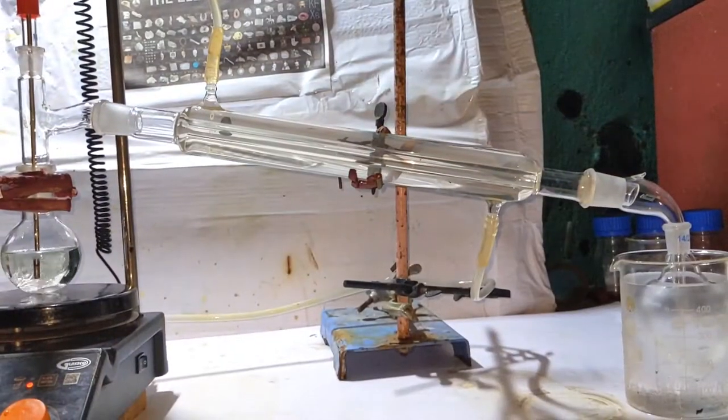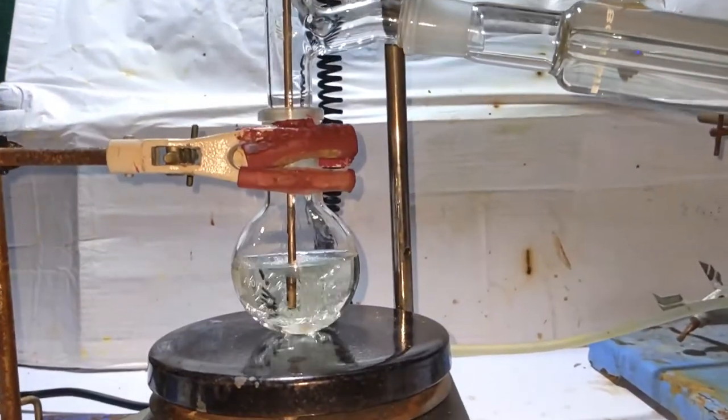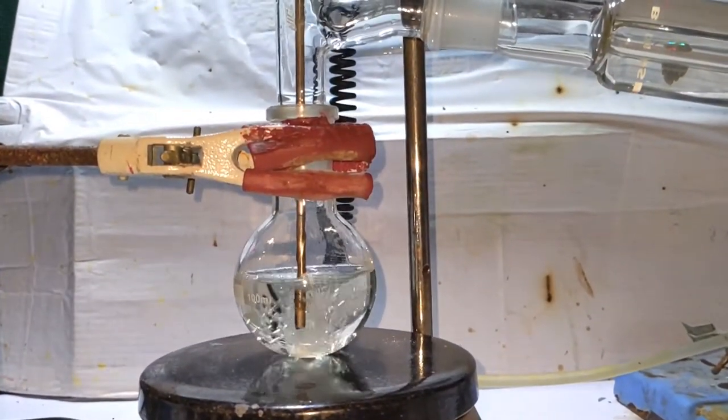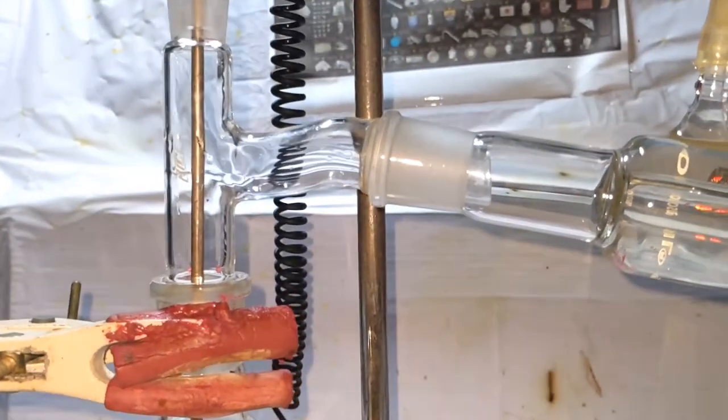After 30 minutes, we will set up the flask for simple distillation and collect everything below 100 degrees Celsius. This can also cause the distillation of water, which is not going to be a problem because we will be removing that in the upcoming steps.